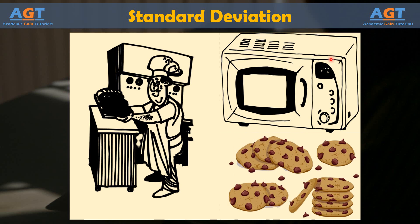It's important to note that removing variation alone doesn't always improve quality. What if the cook set the oven to 400 degrees all the time and only used half a cup of sugar for each batch? The process has no variation, and neither do the results. The cookies will always be bland and burnt.